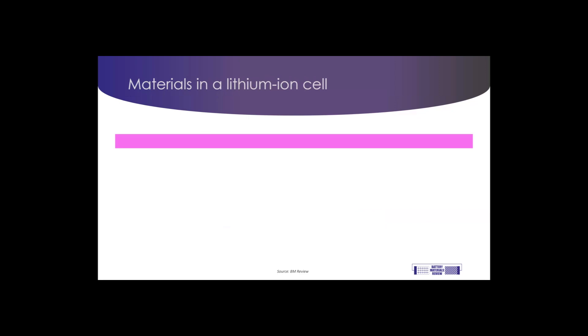So let's talk about the materials that go together to make a lithium ion cell. In a lithium ion battery, the cathode generally consists of lithium and metal oxides.